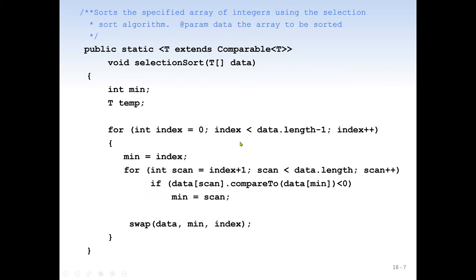Now let's look at the coding. This is the implementation using Java. Our method name is selection sort, and it takes one parameter — an array named 'data' with a generic data type. First we declare a variable named 'min', and we also have a temp variable of generic type T for swapping.